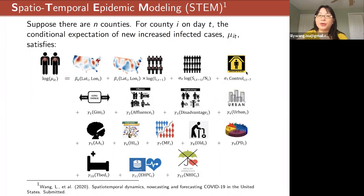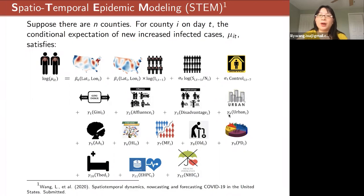We assume this dynamic effect varies from location to location, so we have geographic information modeled as latitude and longitude for each county, and we assume the effect varies from county to county. We also included a lot of local features — for example, the control policy from different local governments. We also considered many other local characteristics such as the Gini index, which measures economic inequality in a local county, as well as the county's disadvantage level, urban-rural features, and demographic information like the ratio of African American, ratio of Hispanic, male-female ratio, age distribution, and population density.